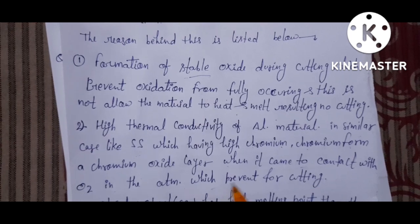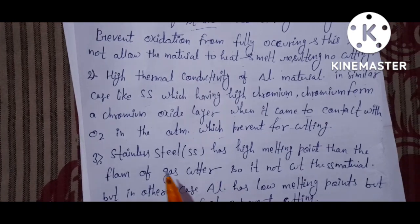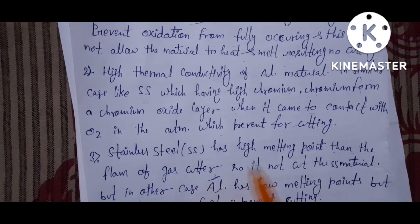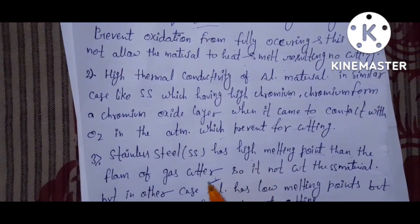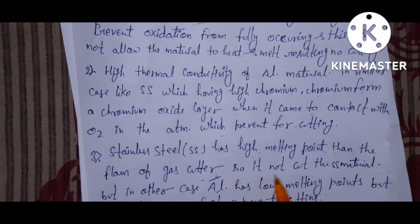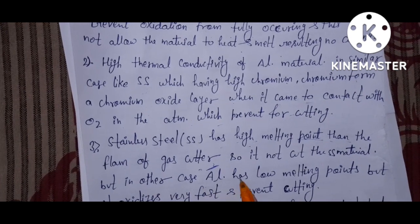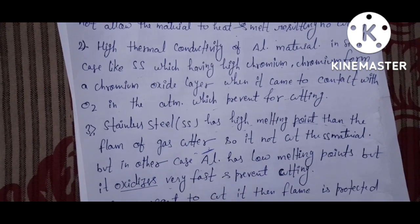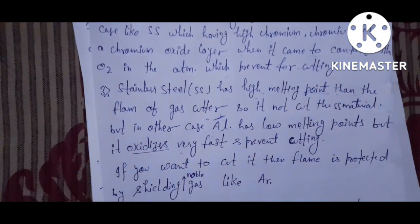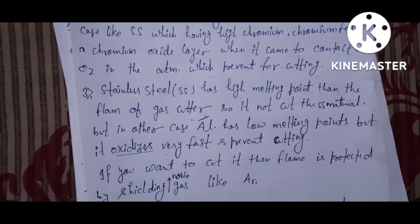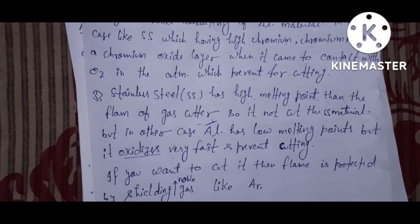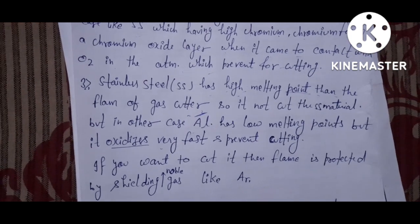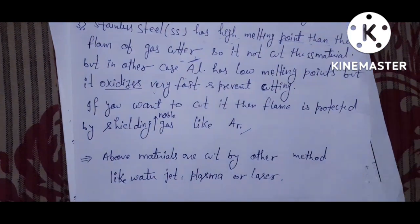The third reason is that stainless steel has a higher melting point than the flame of the gas cutter, so it is not cut easily. In contrast, aluminium has a low melting point but its oxide forms very fast and prevents gas cutting. If you want to cut aluminium by gas cutter, you need to use a shielding gas — argon, which is a noble gas.